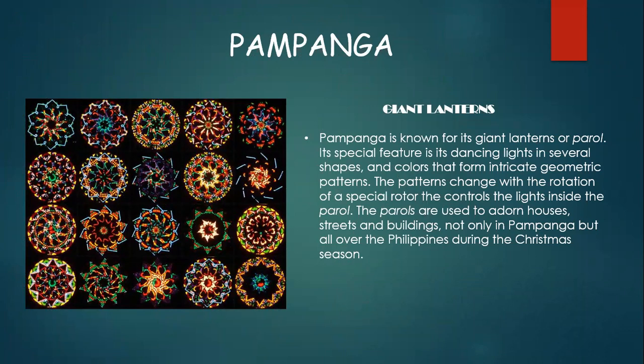Pampanga is known for its giant lanterns or parol. Its special feature is its dancing lights in several shapes and colors that form intricate geometric patterns. The patterns change with the rotation of a special rotor that controls the lights inside the parol. The parols are used to adorn houses, streets, and buildings, not only in Pampanga but all over the Philippines during the Christmas season.